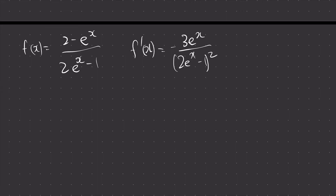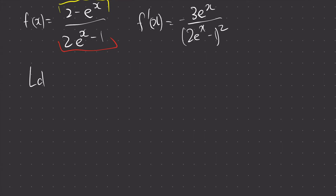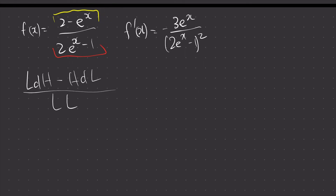How do you do it? First, I recognize that we have to use quotient rule — because I have a function on top and a different function on the bottom, divided with each other. When different functions are divided by each other, I use quotient rule. The formula is: low d high minus high d low, over low squared.